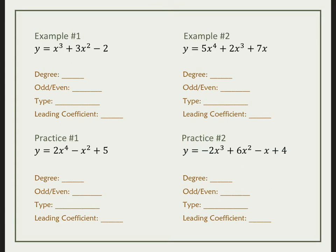Let's talk about the degree and is it odd or even, and fill in these blanks. The degree is going to be my highest exponent. In this case, my highest exponent is 3, and that's odd. That's going to help us with end behavior to know it's odd.